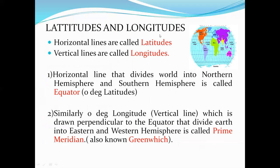Coming to latitudes and longitudes. If you observe over this globe, it consists of horizontal lines and vertical lines. Horizontal lines are called latitudes and vertical lines are called longitudes. The horizontal line that divides the world into northern hemisphere and southern hemisphere is called the equator, which is zero degree latitude.